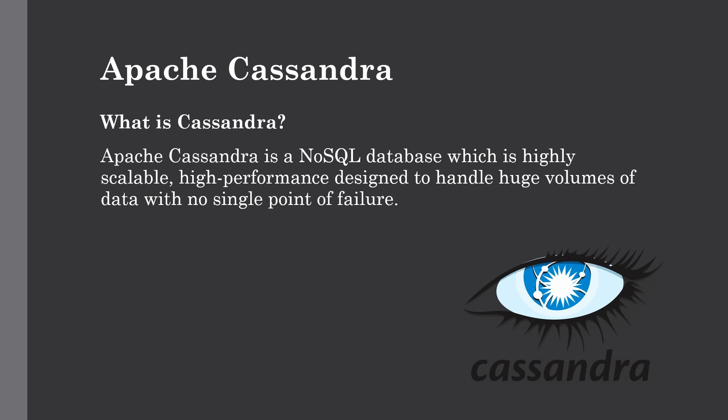I hope you already know what a NoSQL database is and how data is stored in it. If not, I recommend watching our previous lectures where I discussed what NoSQL is, how data is stored, and how it differs from relational databases. NoSQL databases don't have a fixed schema, so data can be sparse and have a flexible schema, which makes sense for agile development. Now let's talk about some of the main features of Cassandra.